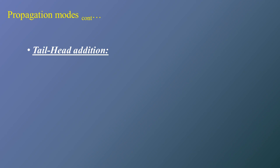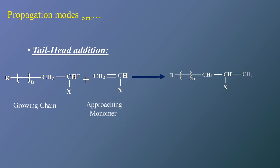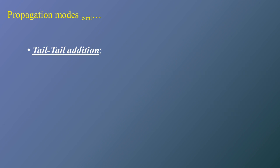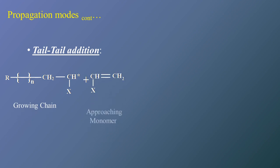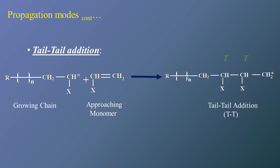In tail-head addition, it will be the tail of the growing chain reacting with the head of the fresh monomer. In the reaction, the new bond is formed at the tail position of the growing chain and the head position of the fresh monomer — that is why it is called tail-head addition. In tail-tail addition, as the name indicates, the tail of the growing chain reacts with the tail of the approaching monomer, and both tails are joined with a new bond.